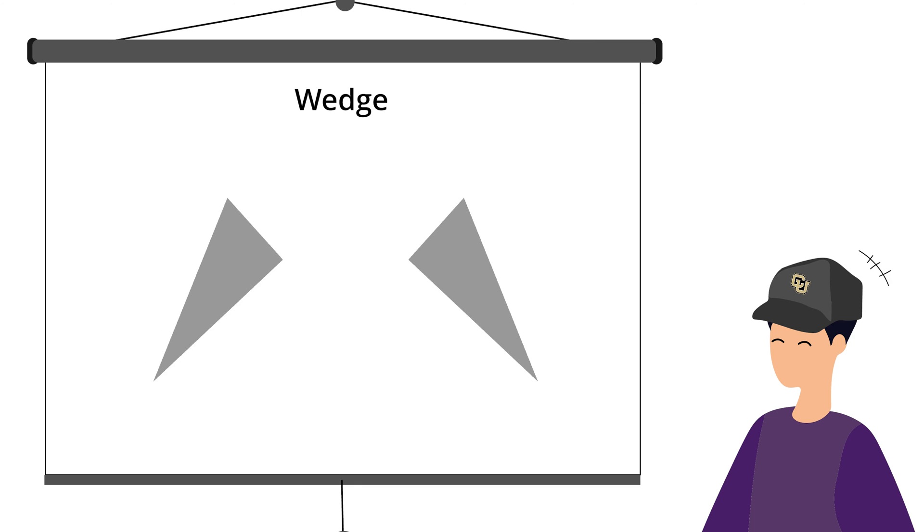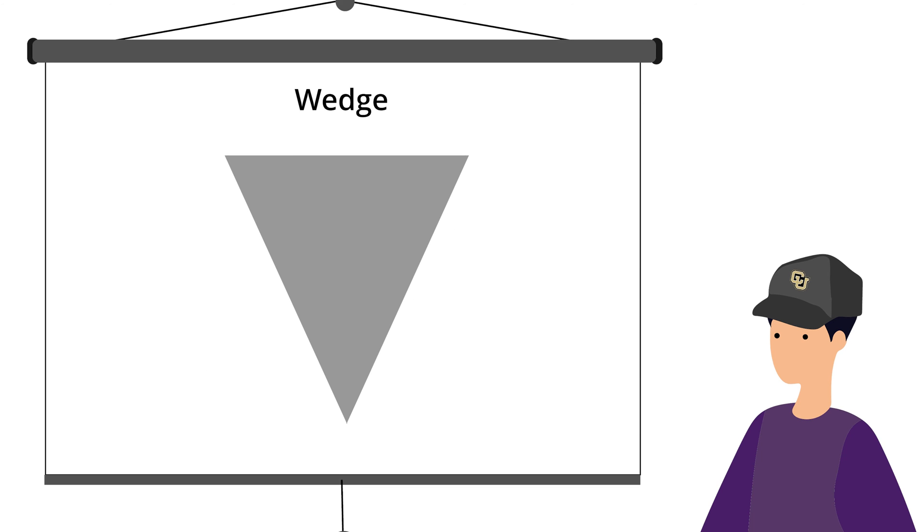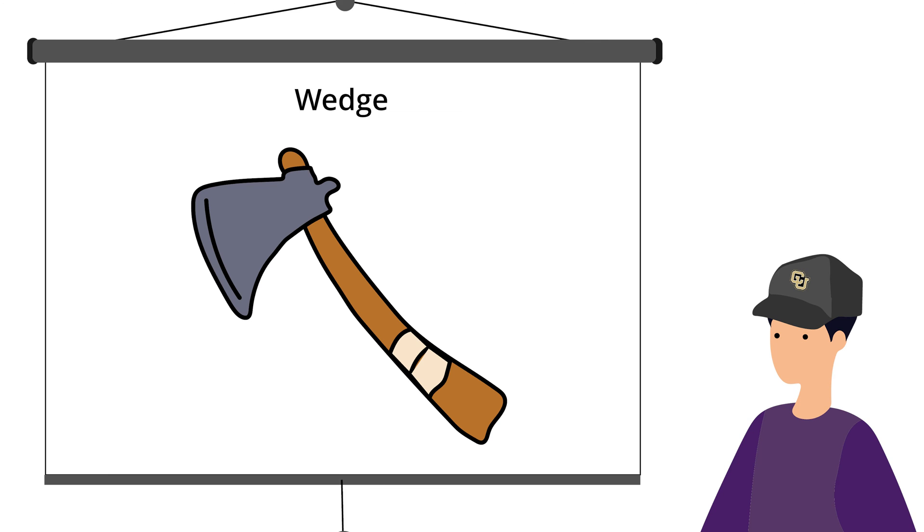Wedge. The wedge is two inclined planes put together. It can be used to split things apart, such as an axe, or to hold things such as a doorstop.